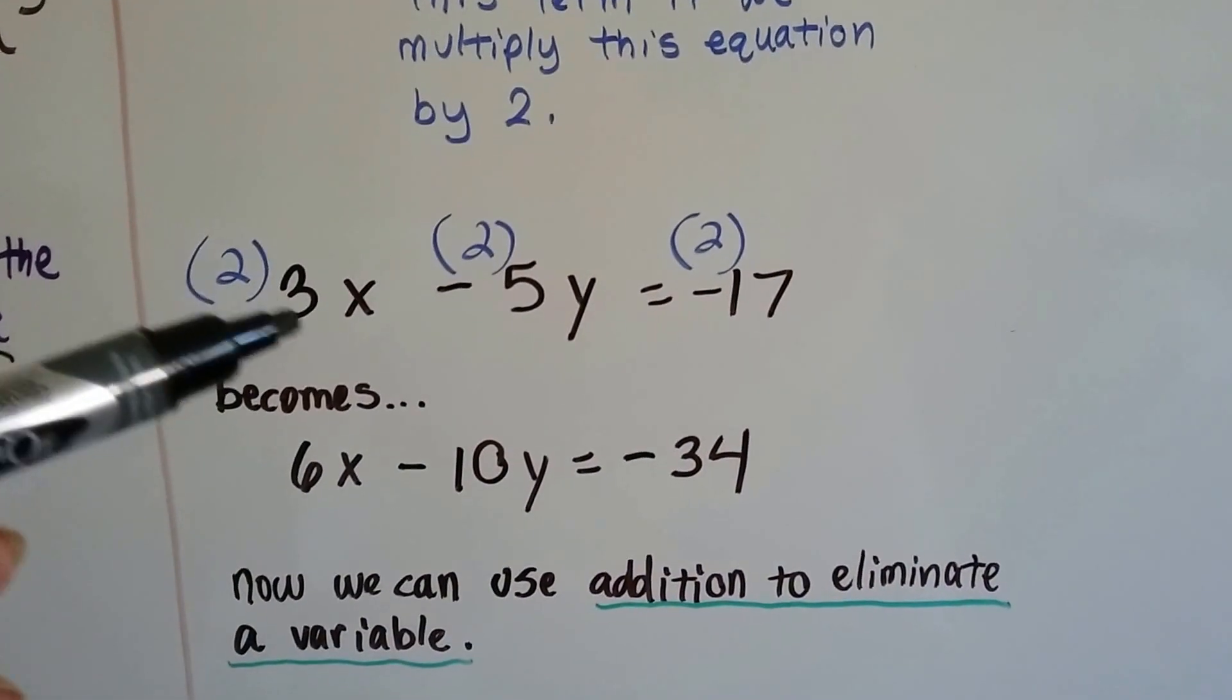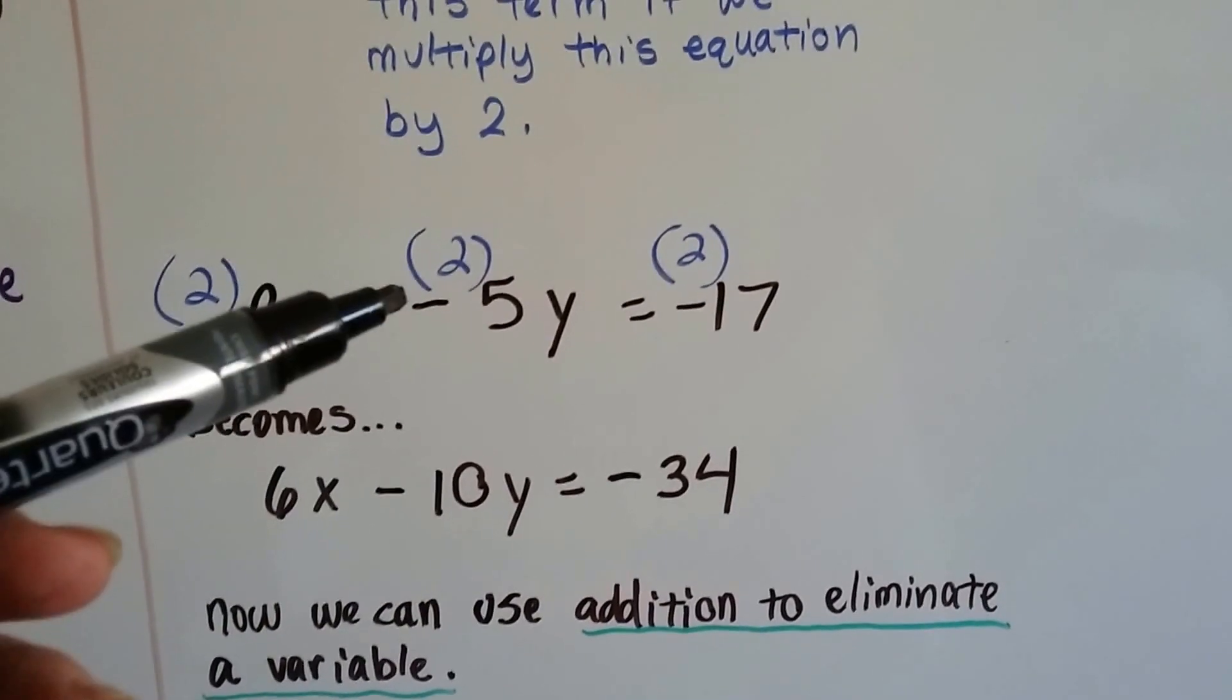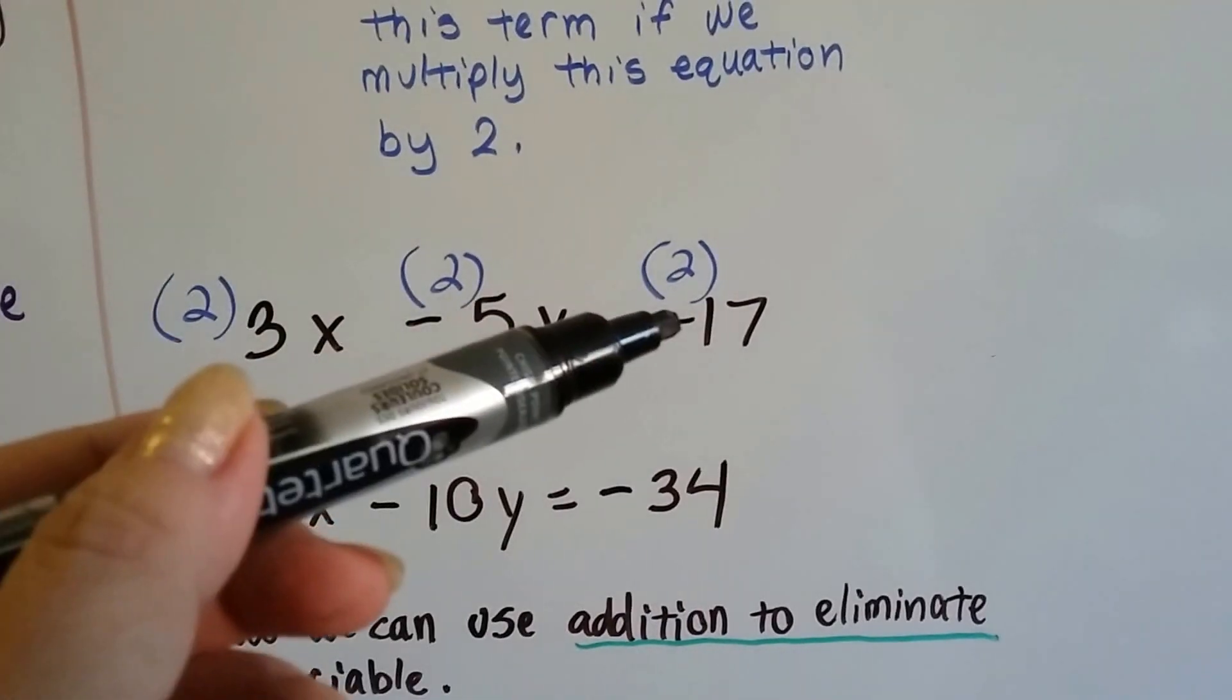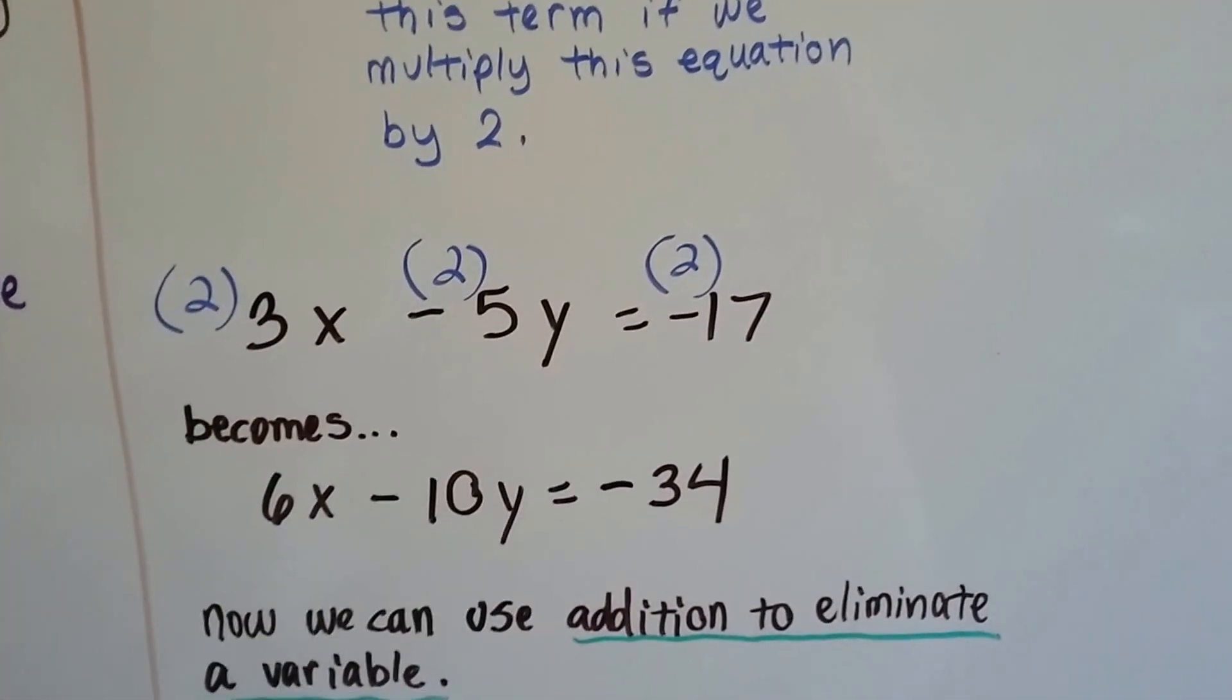So 3x times 2 is 6x. Negative 5y times 2 is negative 10y. Negative 17 times 2 is negative 34.